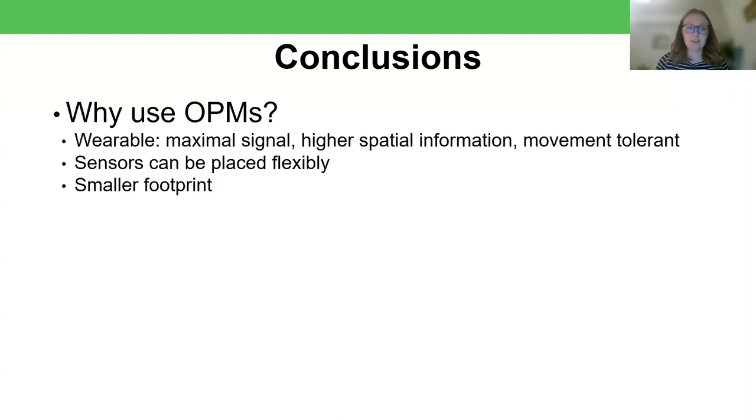So to conclude, firstly, we talked about why use OPMs for MEG at all. And really, the advantages come from being able to get rid of that cryogenic dewar, because it means we can create a system that is wearable. So we get maximum signal for any head size, higher spatial information, and a system that is much more movement tolerant, because the sensors move with the brain. Additionally, the sensors can be placed flexibly, so we're no longer restricted to this head-shaped dewar that we had before. And it means you can have a smaller footprint, so your lab can take up less space, because there's no need to store the liquid helium anymore.